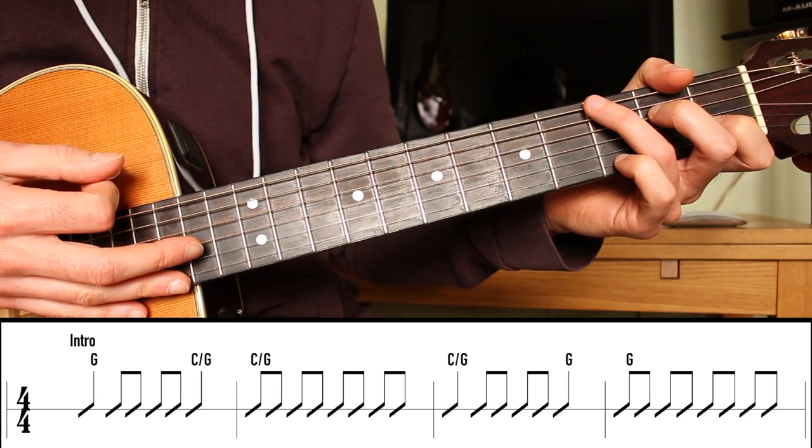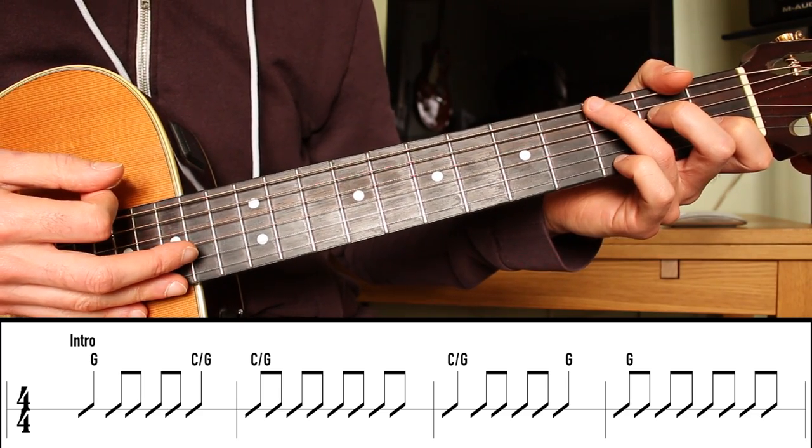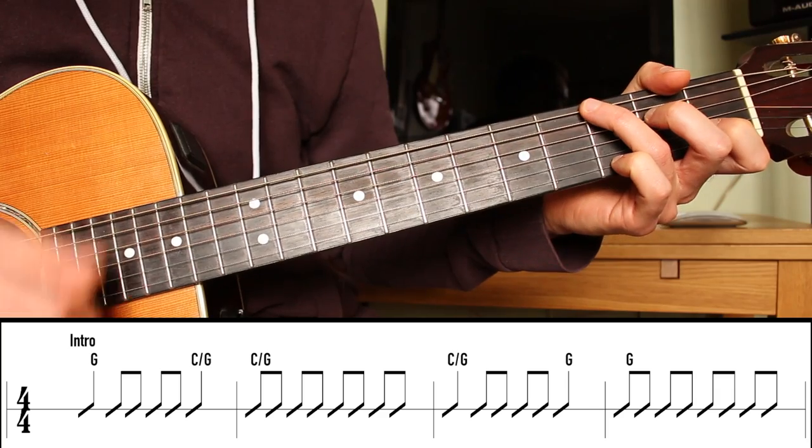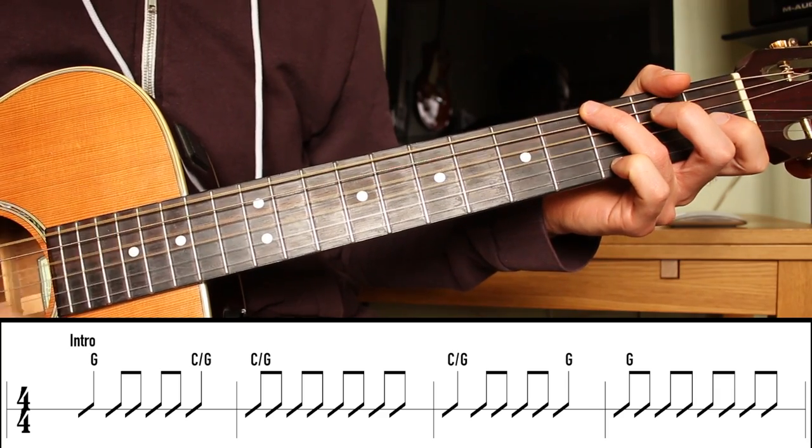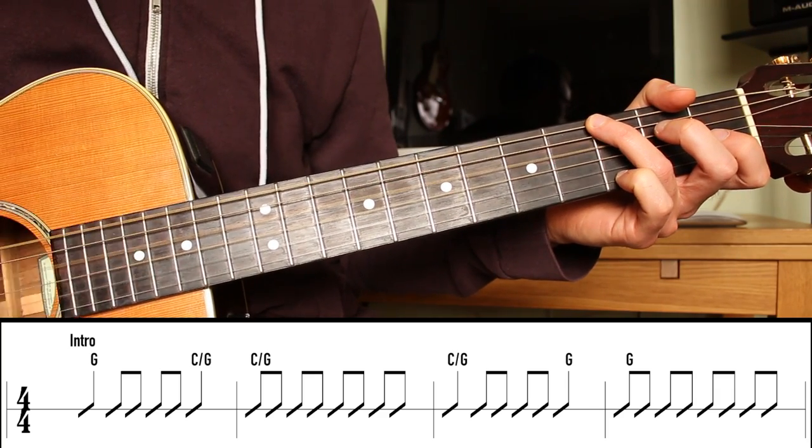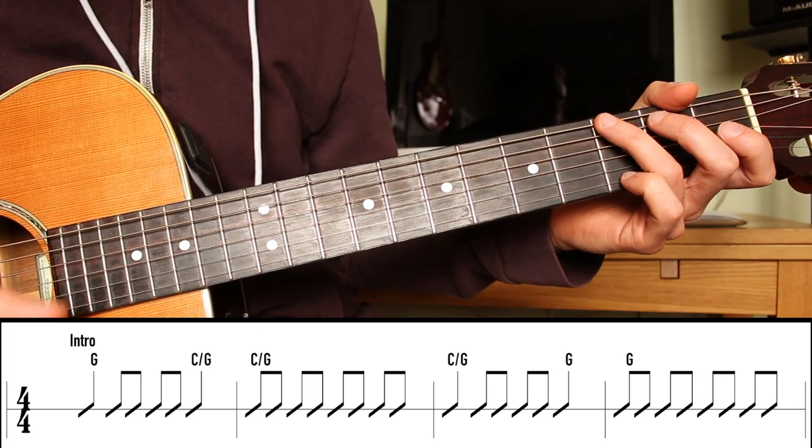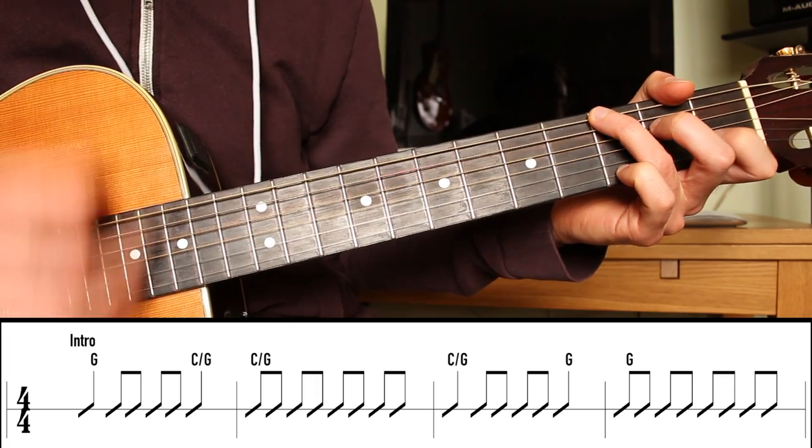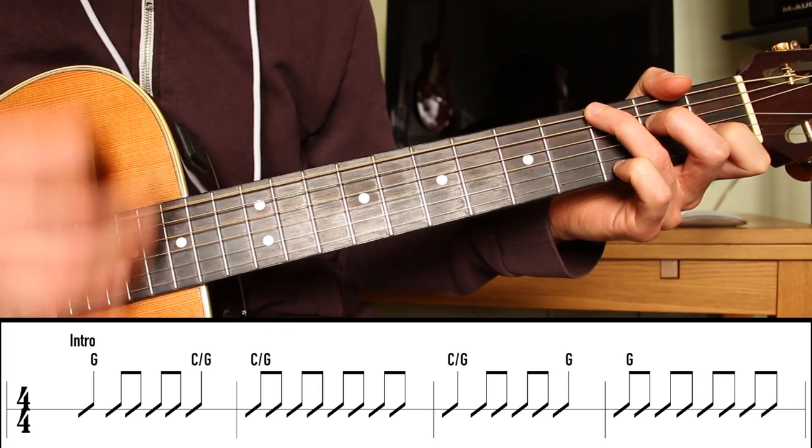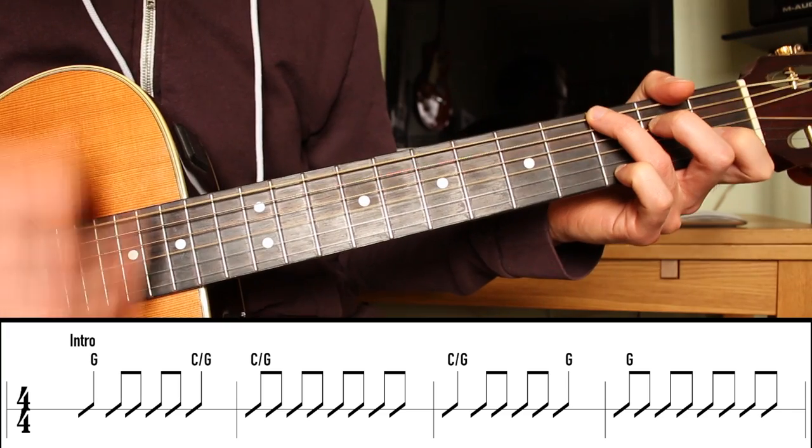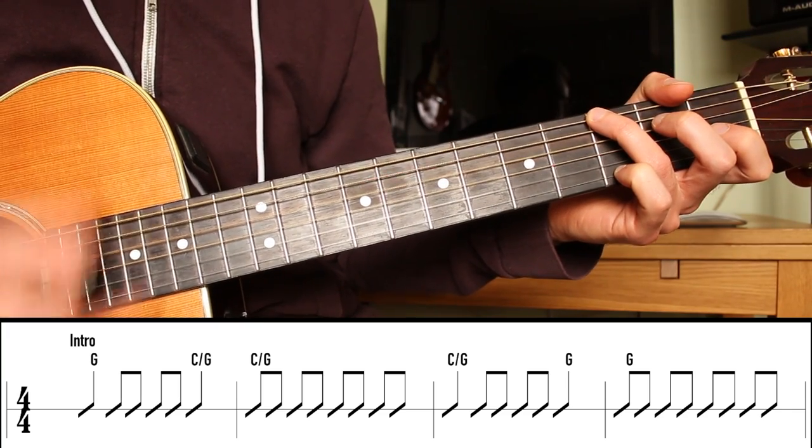And then the same rhythm in the third measure as the first, but we move back to the G on the beat number 4. 1, 2, and 3, and 4. So again, that all together goes like this. 1, 2, and 3, and 4. 1, and 2, and 3, and 4. And 1, 2, and 3, and 4. 1, and 2, and 3, and 4.